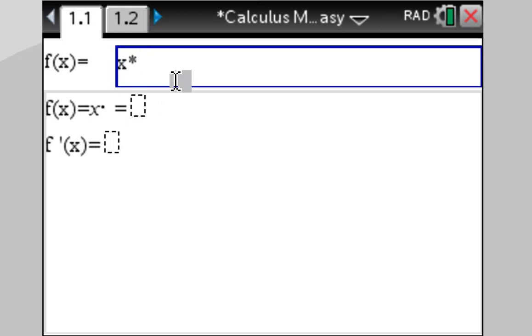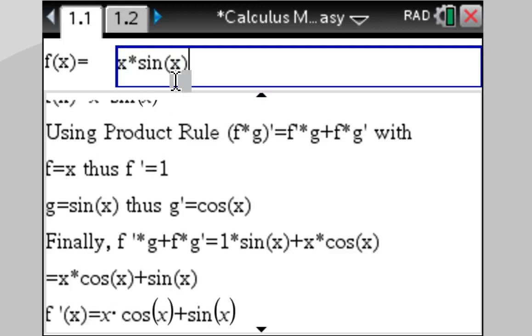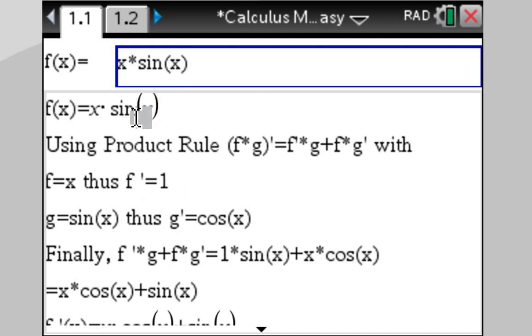x times sine of x. Here we go. Using the product rule, which is here. We're going to do it out, and we eventually end up here at the final answer: x*cos(x) + sin(x). Beautiful.